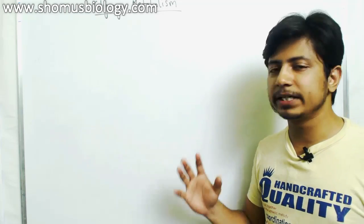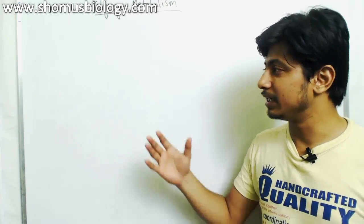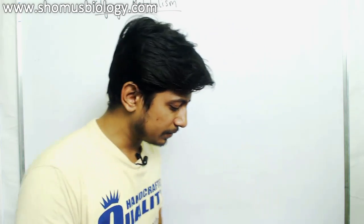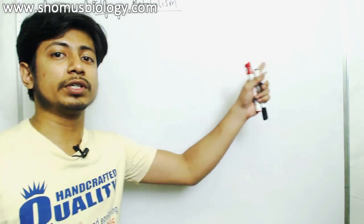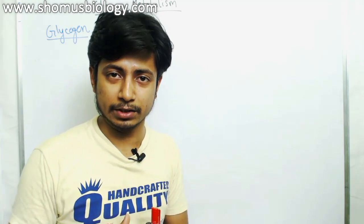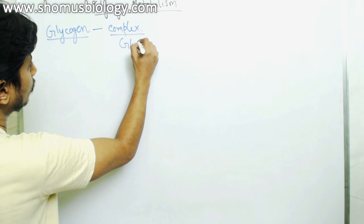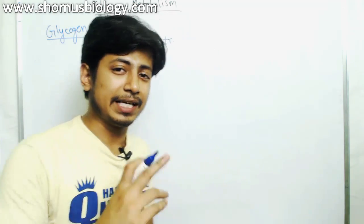In this lecture, I am going to give you an overview of glycogen metabolism — especially how the balance between glycogen synthesis and breakdown is maintained. To understand this, you need to know what glycogen is. Glycogen is a polysaccharide made up of multiple glucose residues joined together with glycosidic bonds, forming a highly branched, complex glucose structure.